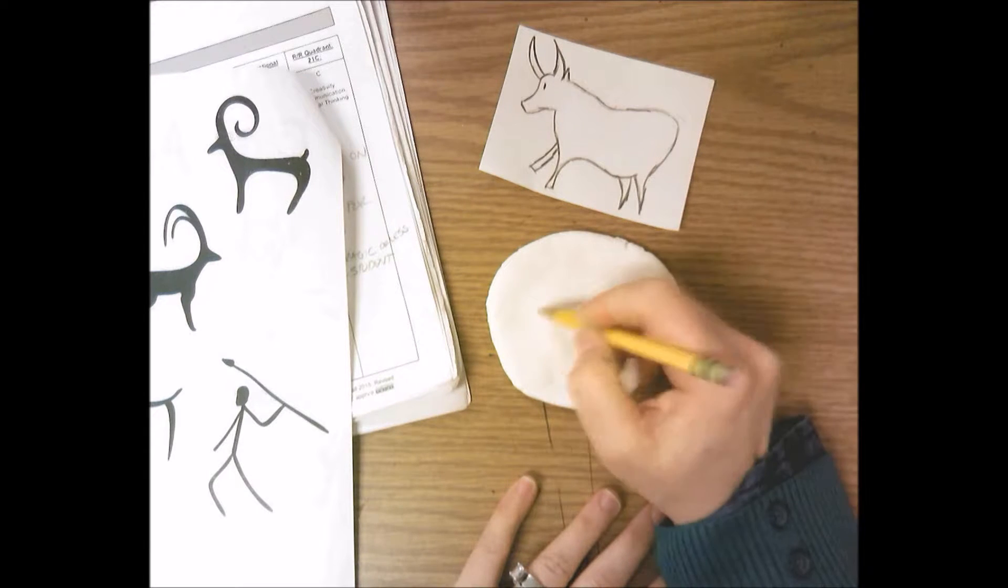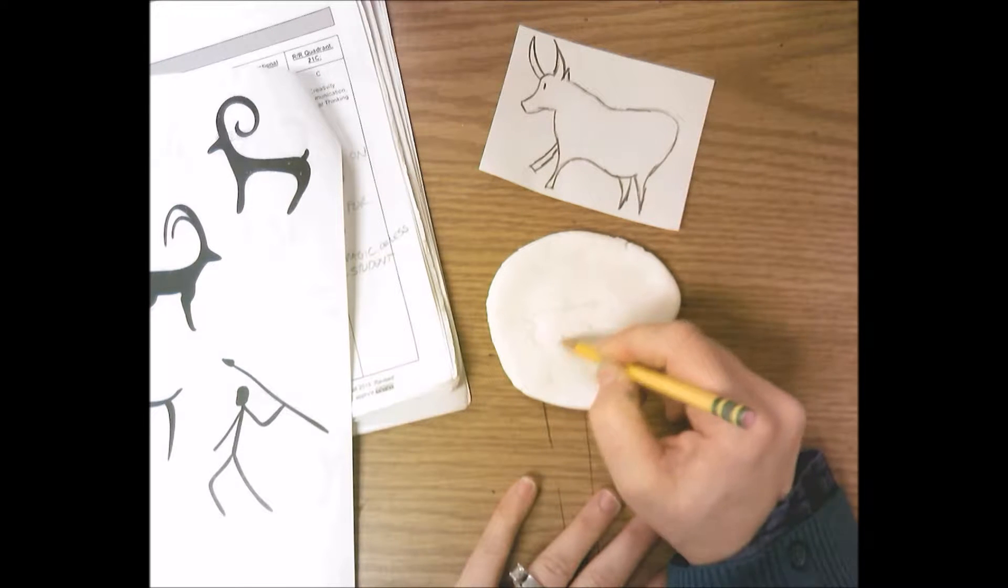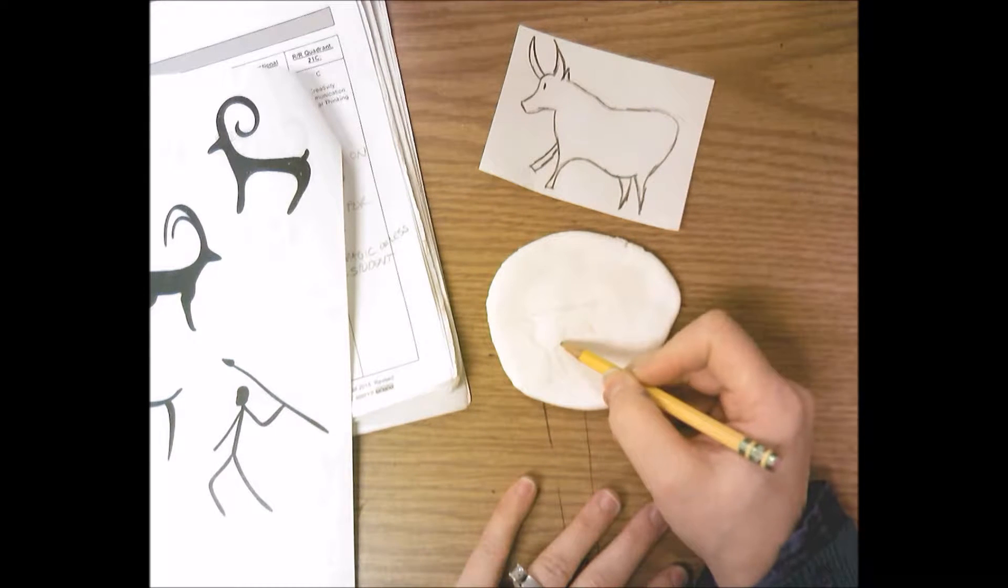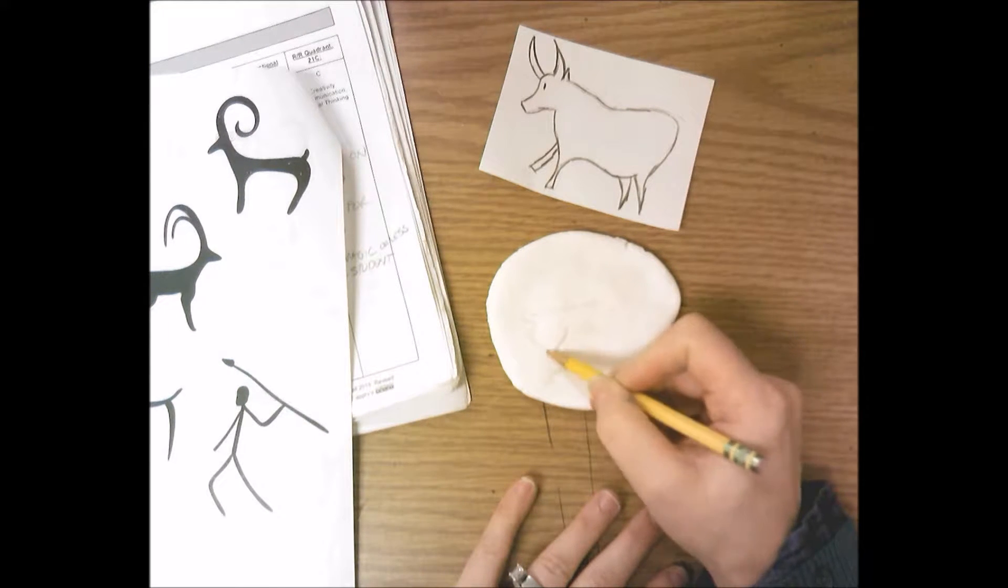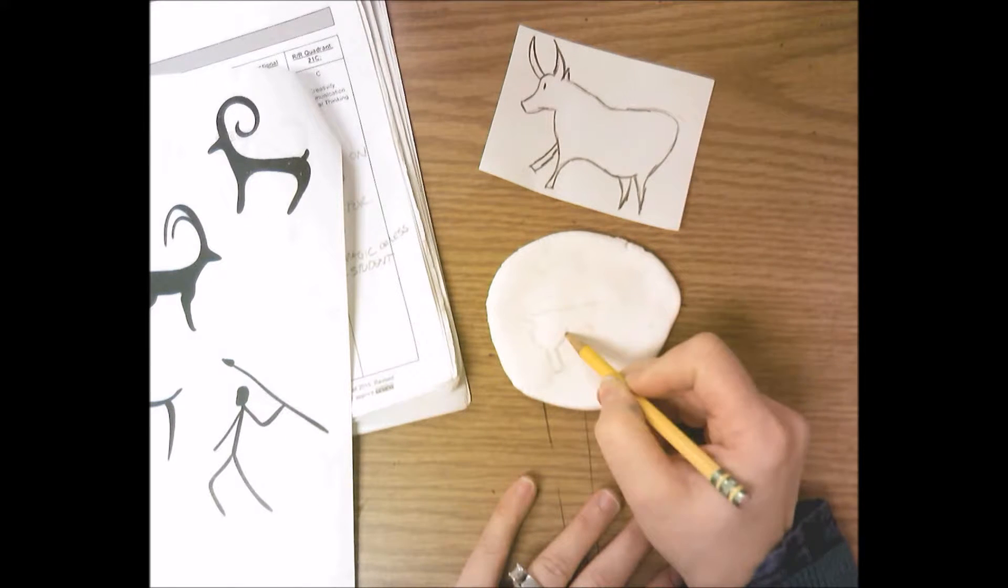You're going to redraw your animal onto your model magic piece real light with your pencil. You don't need to press real hard, you just need a nice light mark for your animal.